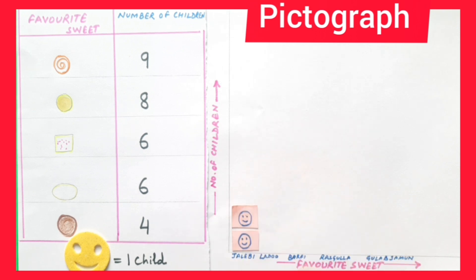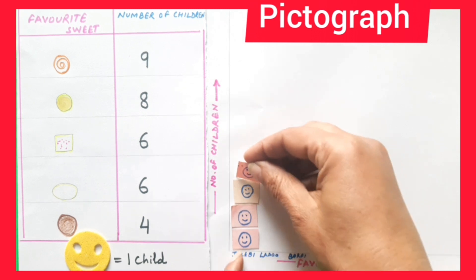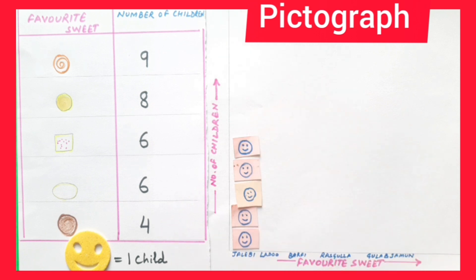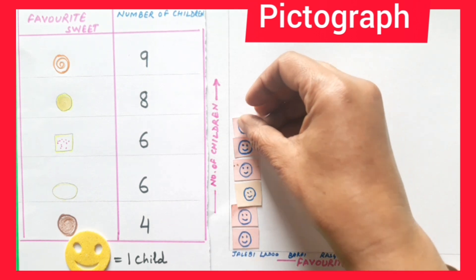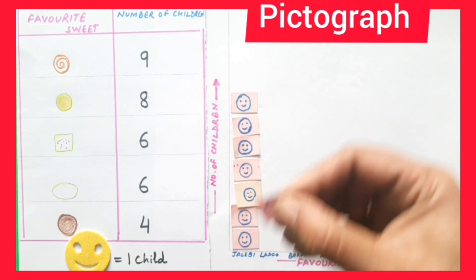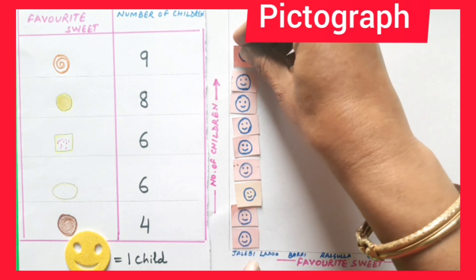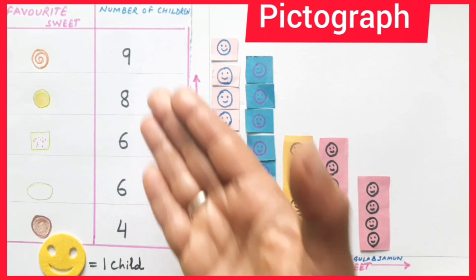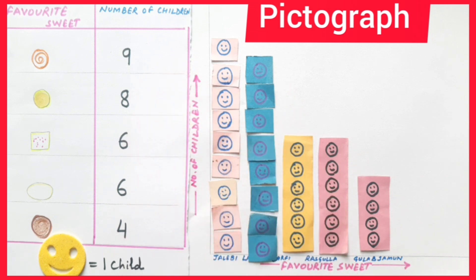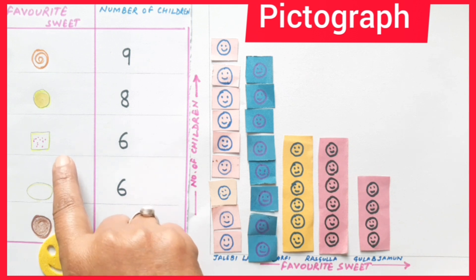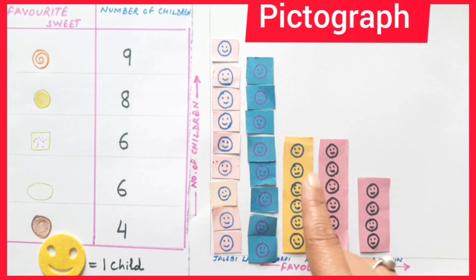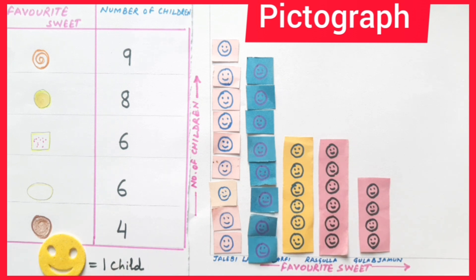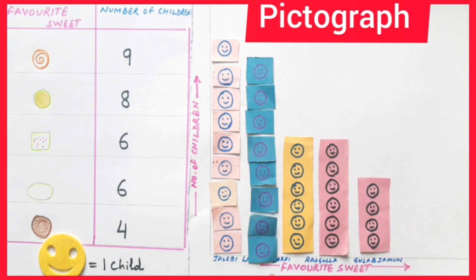Let's see: one, two, three, four, five, six, seven, eight, nine smileys for jalebi. Laddu is represented by eight smileys. In this way, we have represented the whole information in the form of a vertical pictograph. The children liking barfi are six, so it is represented by six smileys. Children liking rasgulla are six, also represented by six smileys. And children liking gulab jamun are four, shown by four smileys. We have depicted the whole information in the form of a vertical pictograph.